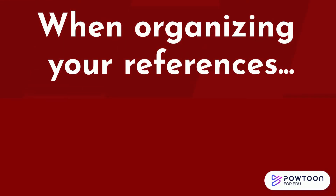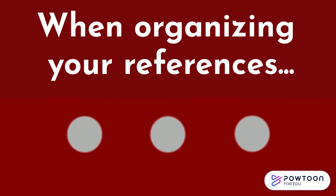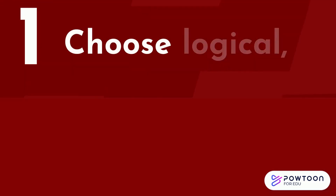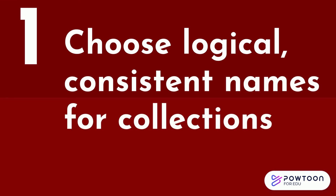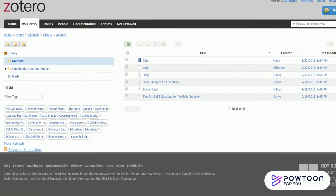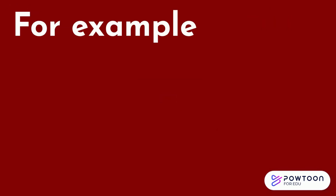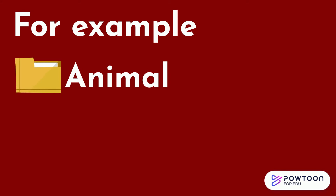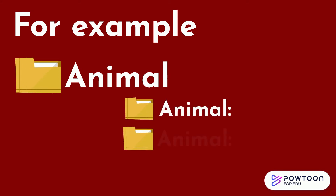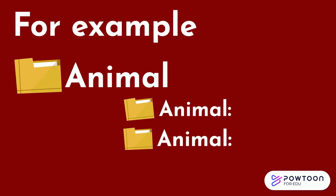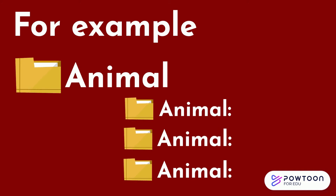When organizing your references, there are a few things to keep in mind. First, choose logical, consistent names for your collections. This will help you to quickly retrieve your research later. For example, for my animal collection, I could use 'animal' at the beginning of each new sub-collection, so it's easy to see which collection they belong to.